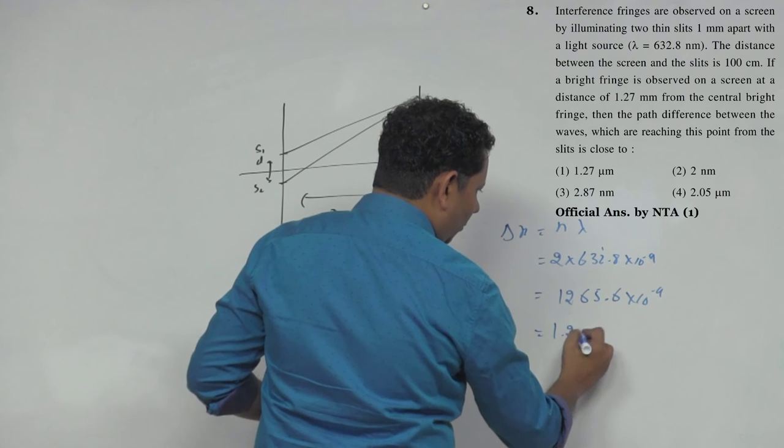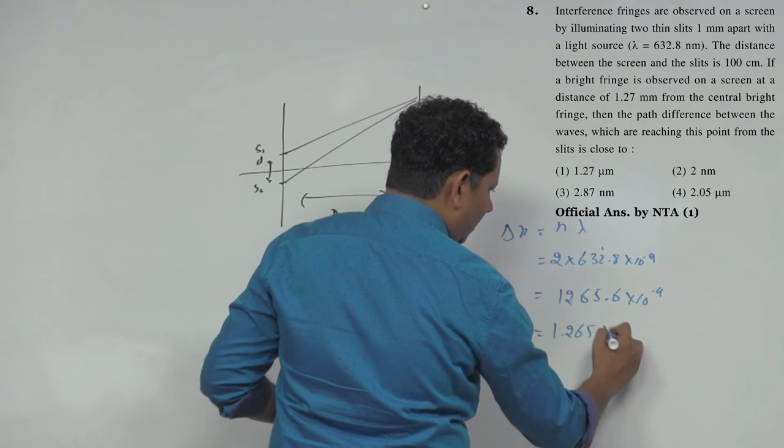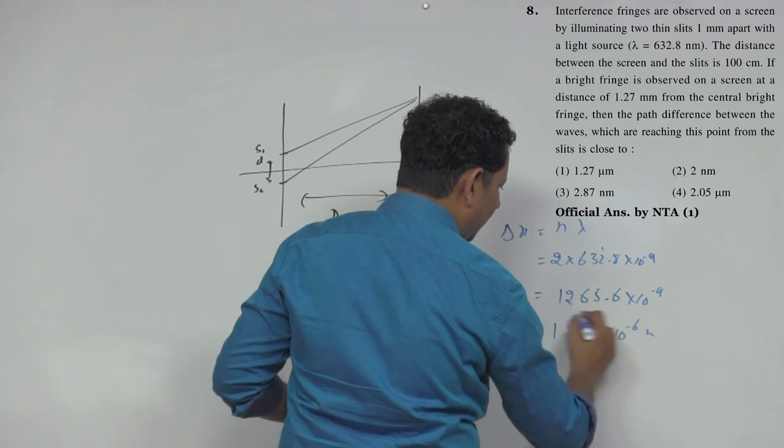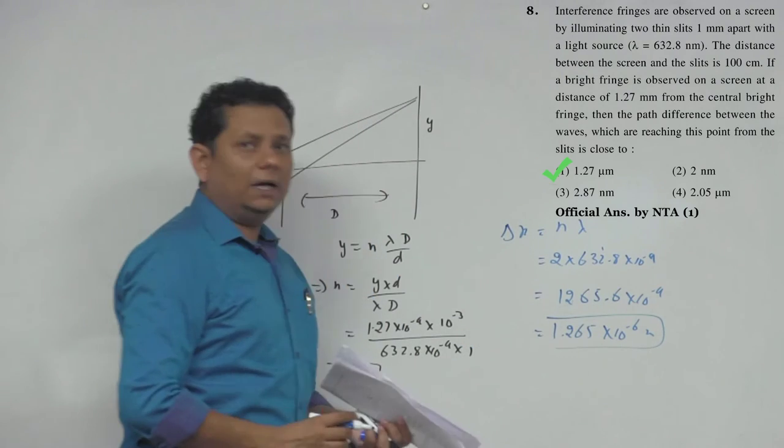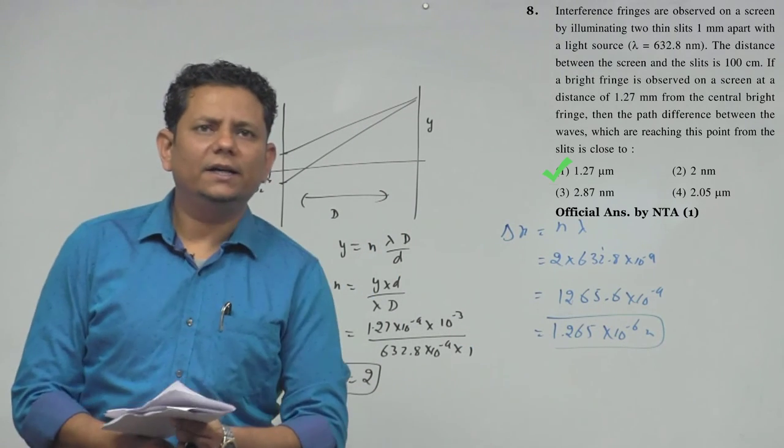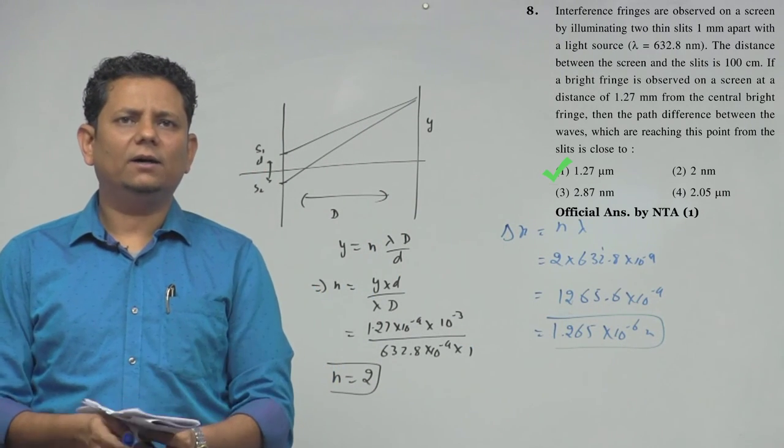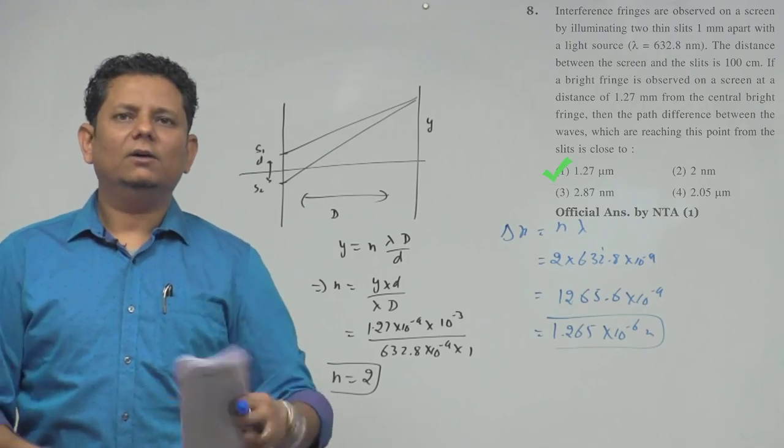So this will be our path difference. The closest answer, which means option number A, 1.27 micrometer, would be the right answer.